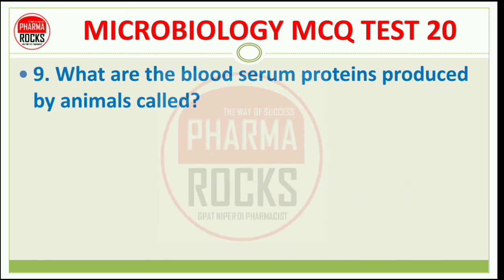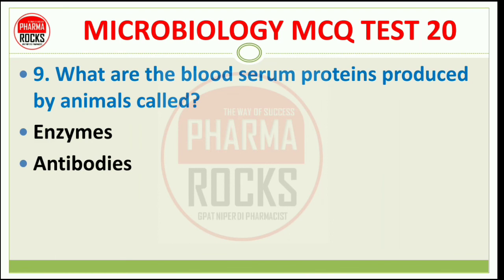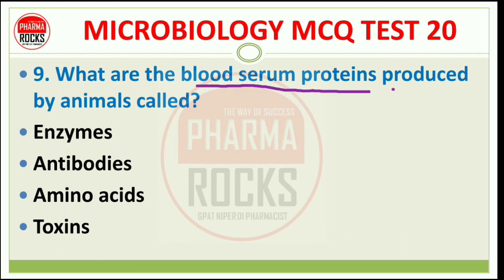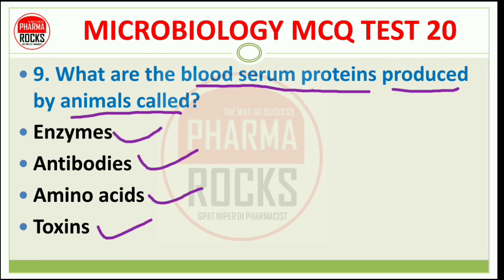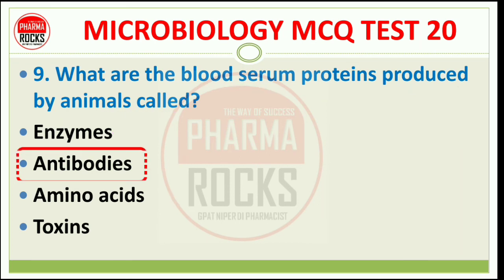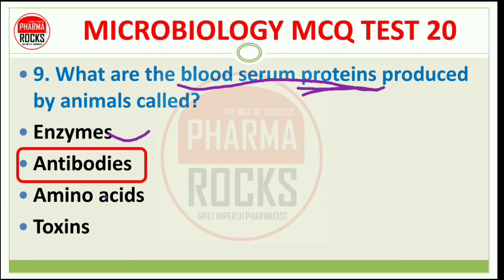Question number 9: What are the blood serum proteins produced by the animal? Options: Enzymes, Antibodies, Amino acids, or Toxins. The right answer is Antibodies. This is an easy question but students sometimes mistakenly select enzymes or amino acids, thinking toxins might also be proteins. The correct answer is antibodies.